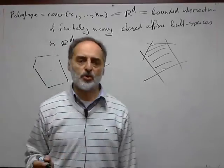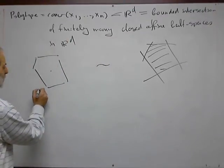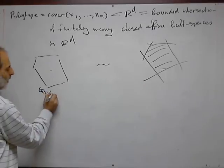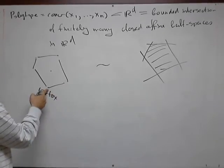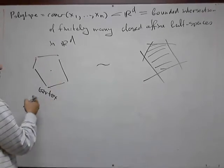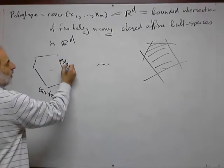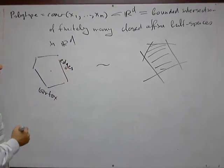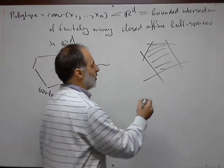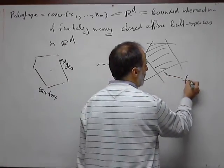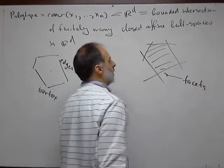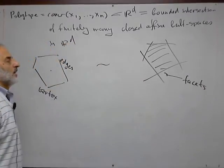We have the usual definition of vertices, which means the most singular point in the boundary of the polytope. These are edges, which are one-dimensional faces, and maximal proper faces.